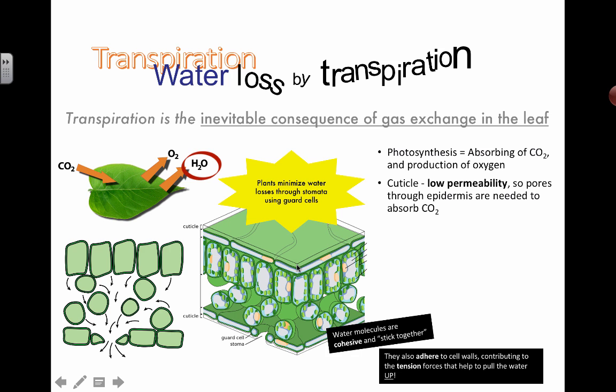Losing water is a pretty negative thing, but because of the properties of water it can continuously get pulled up through the plant. You do need water inside the plant for various functions, including making sure that cells are turgid — it gives these cells support because they don't have a bone structure like animals do.